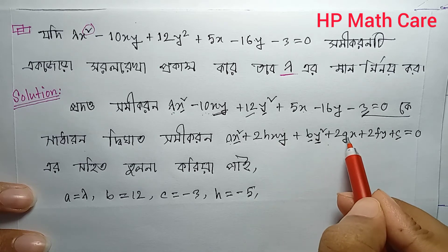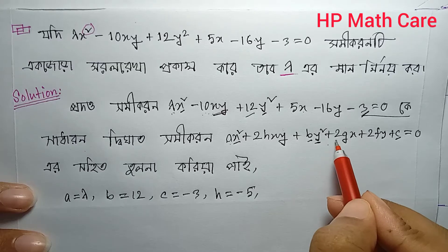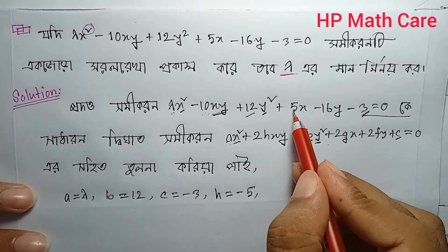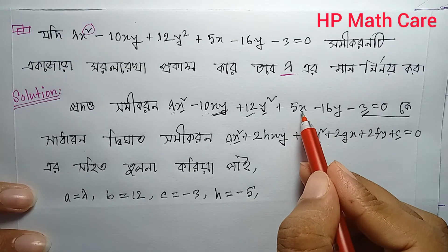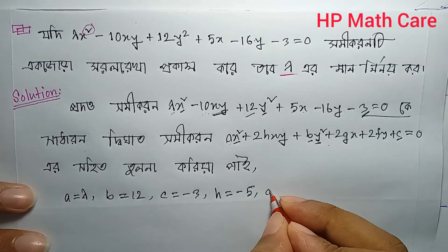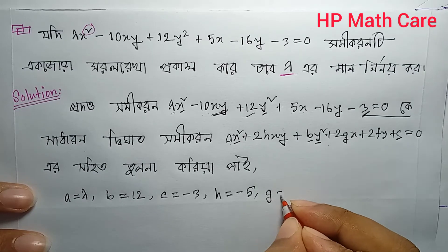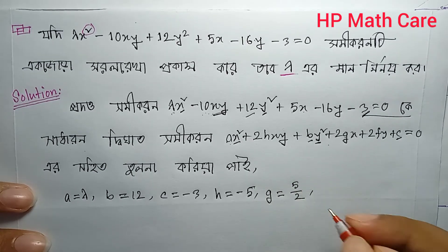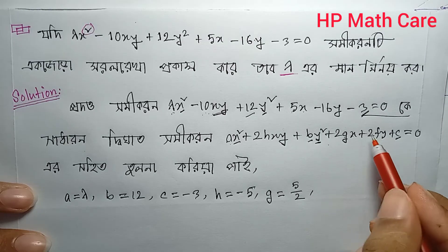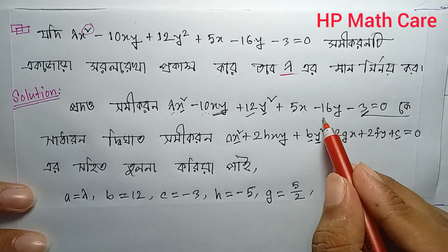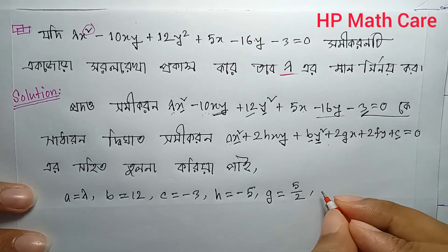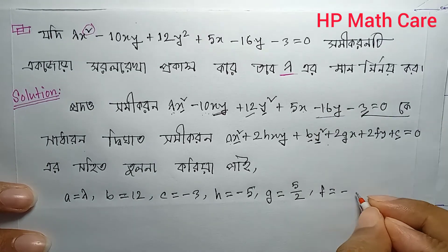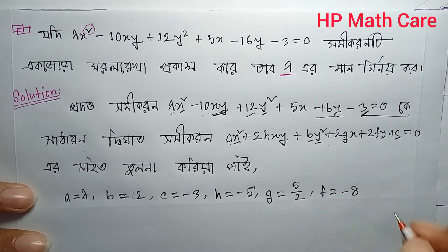Now 2g·x can be 5x, so g = 5/2. And we take f: writing the coefficient of y, which is −16, so f = −8. So g = 5/2 and f = −8.